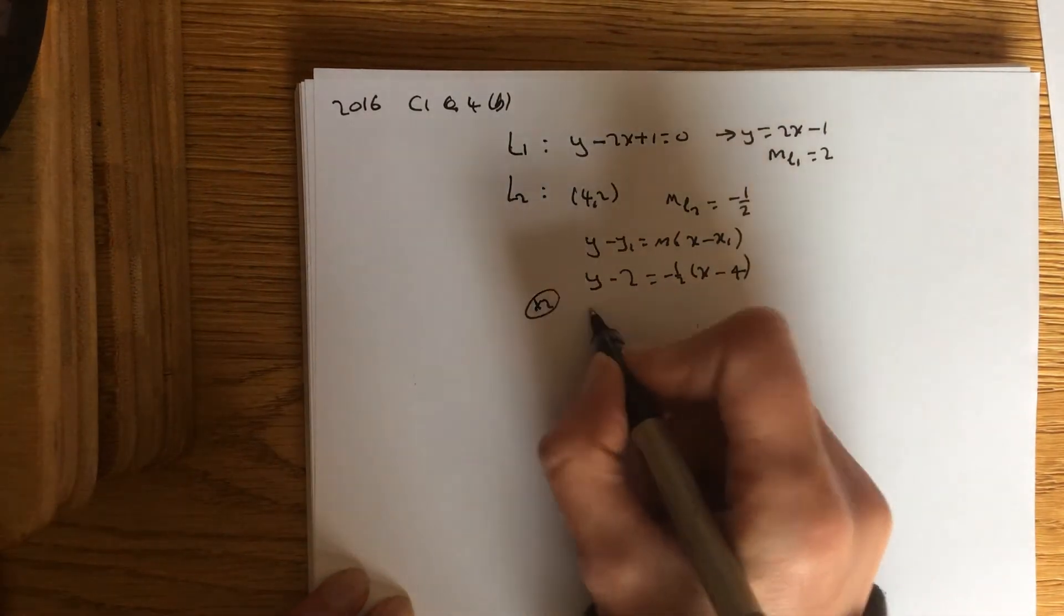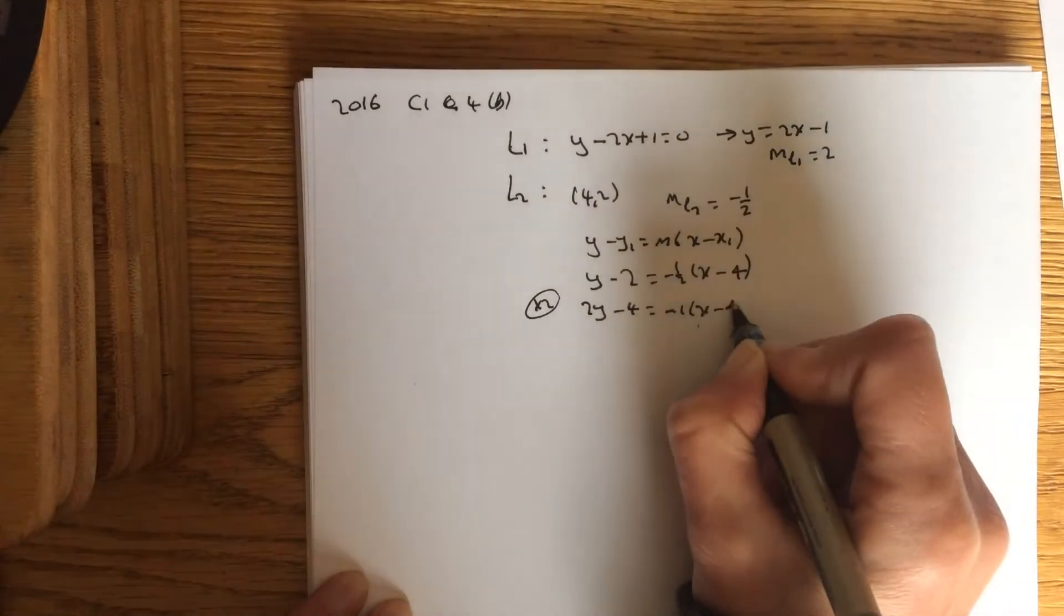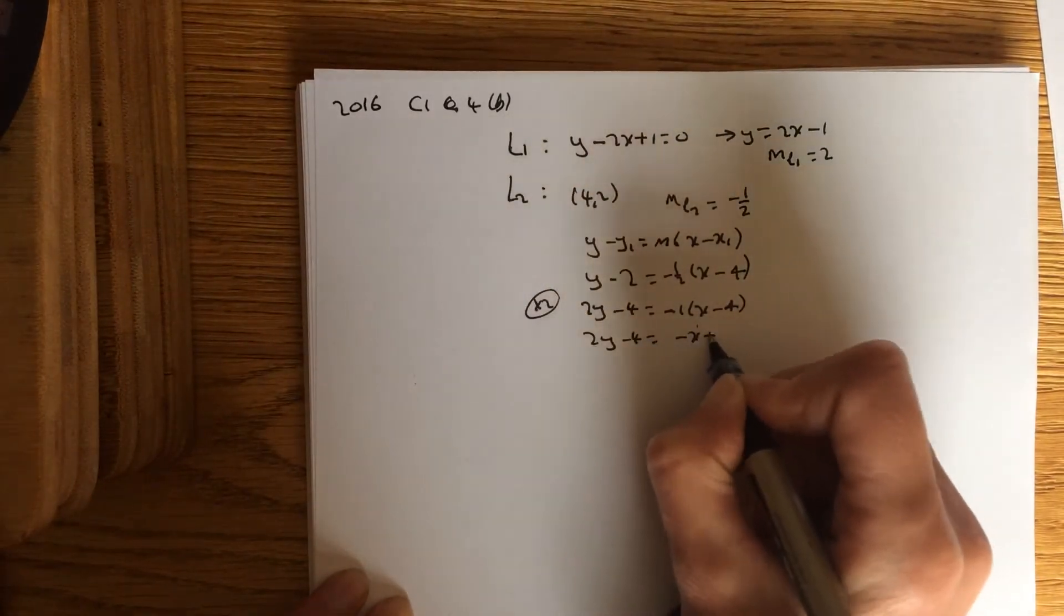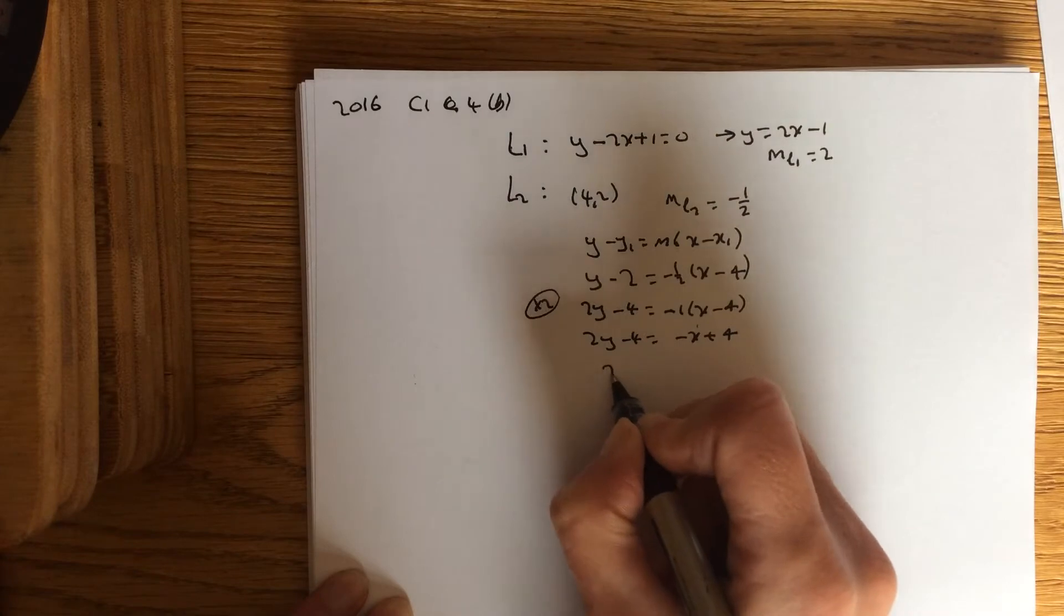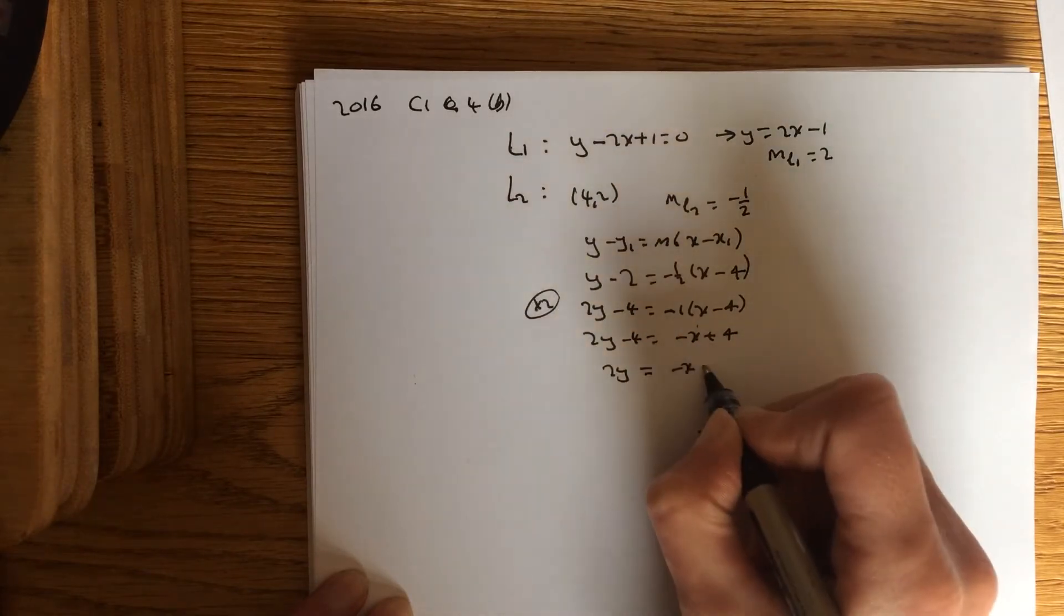I'll times everything by 2, just get rid of that fraction. So 2y minus 4 equals minus 1, x minus 4. Timesing out that wee bracket, and so 2y equals minus x add 8.